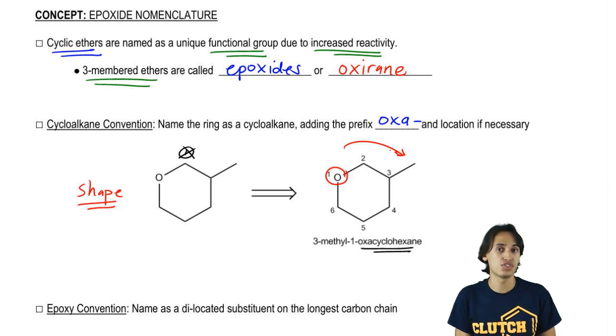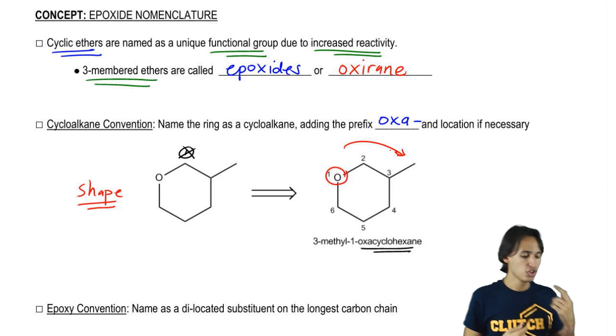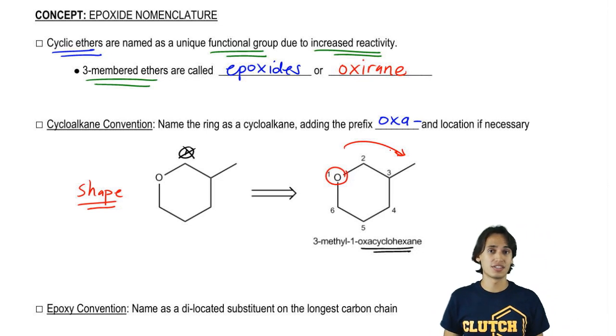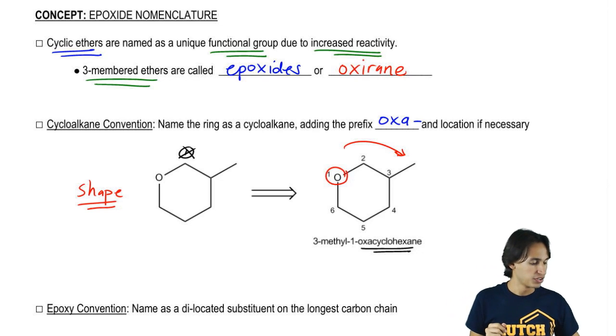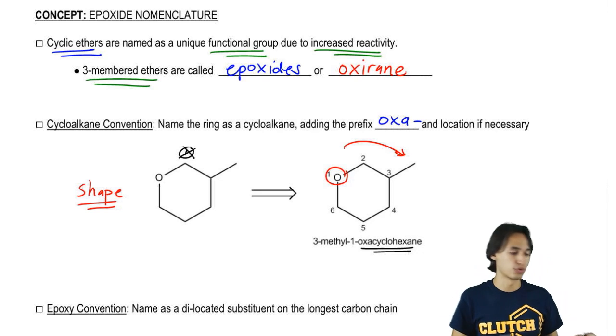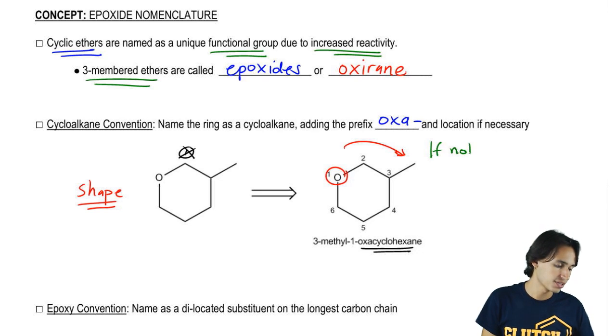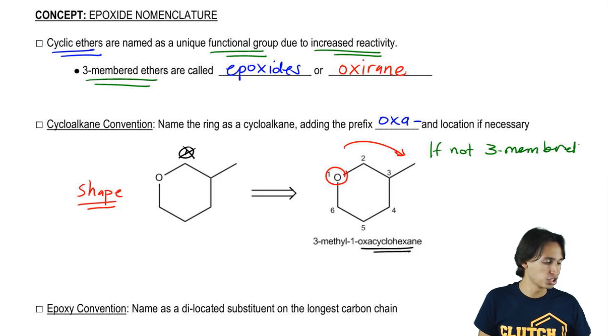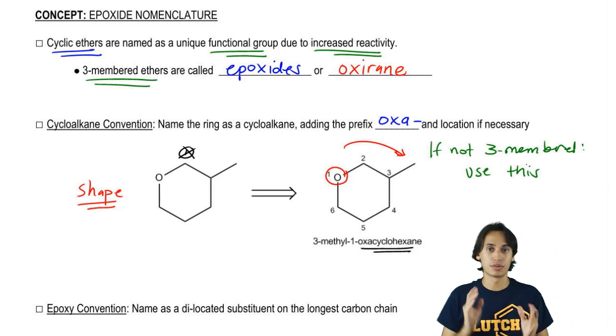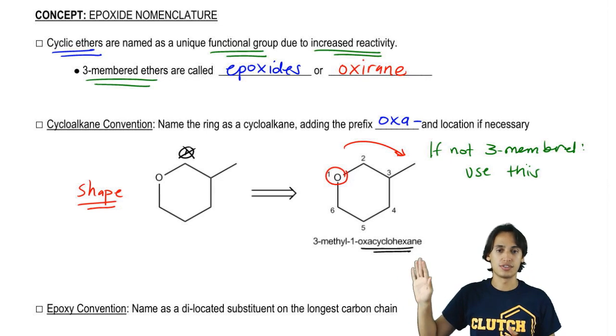Just so you guys know, this also applies to rings that have more than one oxygen. If I had two oxygens, that would be what was called a dioxa. Just putting that out there, you could use prefixes as well. So now let's go ahead and talk about another naming system. This is going to be commonly used for non-three-membered rings. So if not three-membered, as you can see I was dealing with a six-membered one here, this is usually the one we use. So if it's four-membered, five-membered, six-membered, et cetera, you would use this naming system.